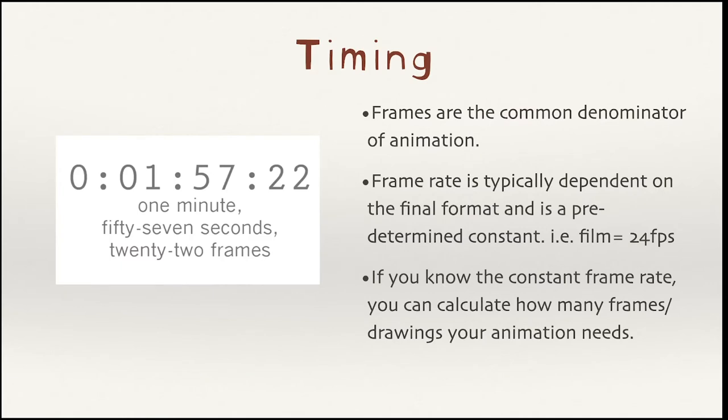The first thing I want to talk about is timing — and particularly timing and spacing — because they go hand in hand. The timing of an animation really has to do with the number of frames or drawings that you need to make something happen. Frames are the common denominator of animation. Usually you have a frame rate that is predetermined and constant, so you have these drawings or frames going by at a very particular rate.